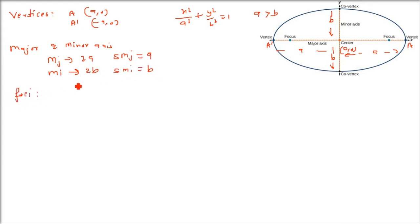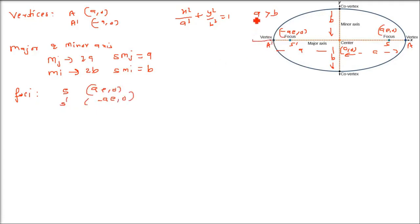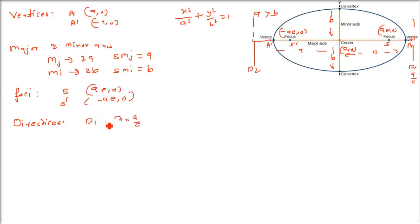Foci: we have S at (ae, 0) and S' at (-ae, 0). Directrices: d1 is x = a/e and d2 is x = -a/e. Center is at (0,0) for this standard case, but we will also discuss the case when the center is not at the origin.